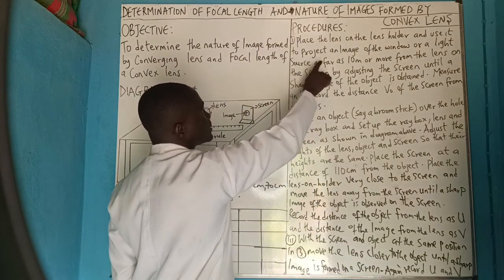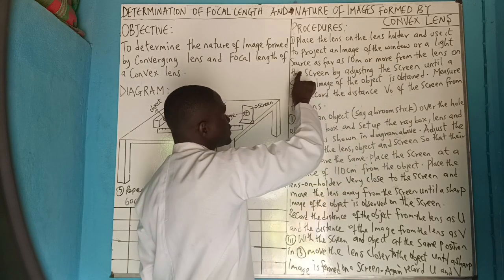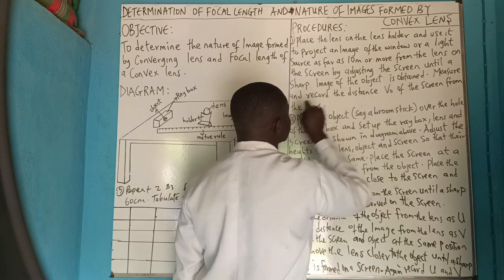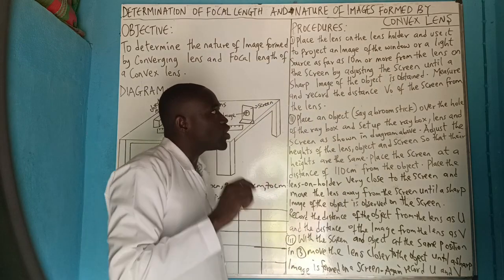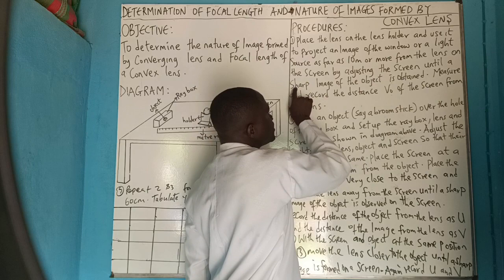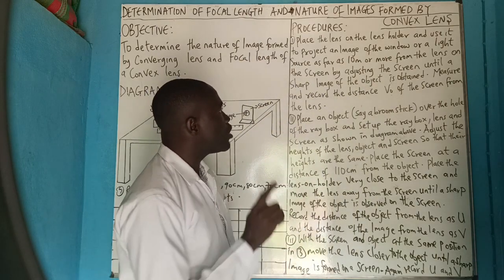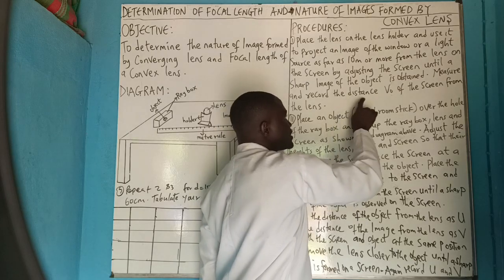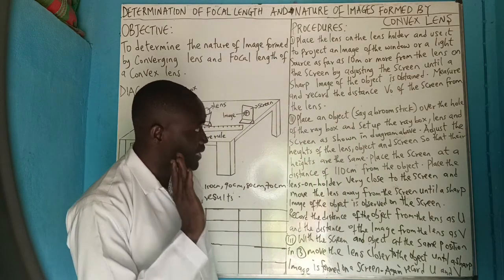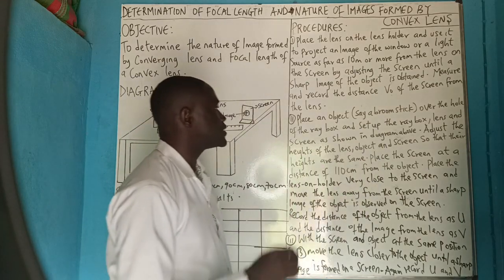The procedure goes this way: place the lens on the lens holder and use it to project an image of the window or a light source at least 10 meters from the lens onto the screen, by adjusting the screen until a sharp image of the object is obtained. Measure and record the distance v₀ of the screen from the lens. Once we get that v₀, we note it.